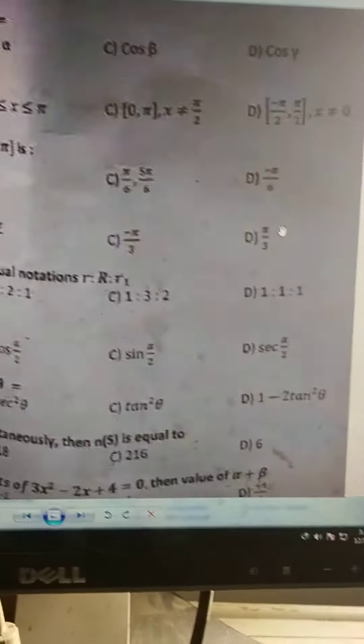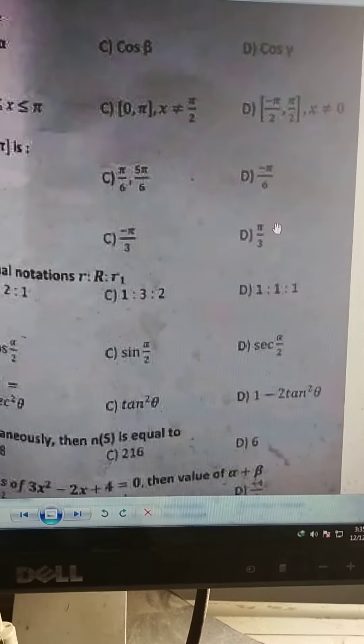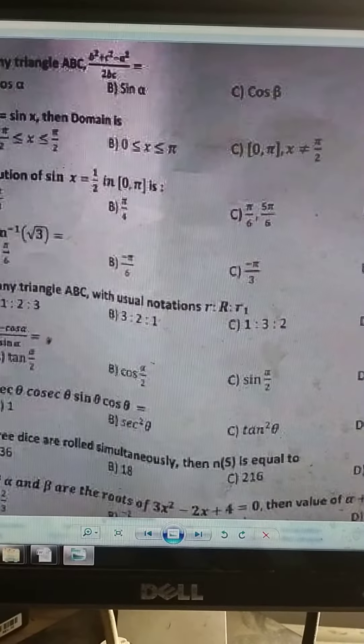We are asking sine x equals 1 upon 2. So two answers will be 30 and 150. So 30 is π by 6 and 150 is 5π by 6.